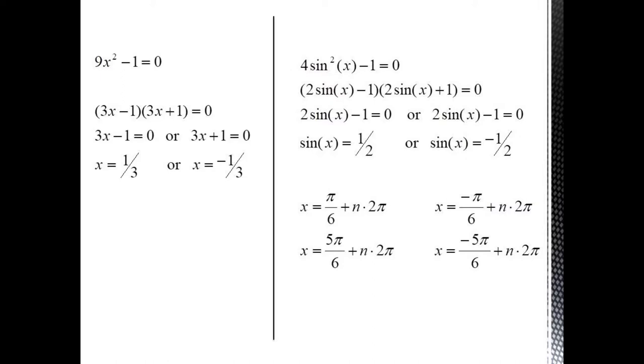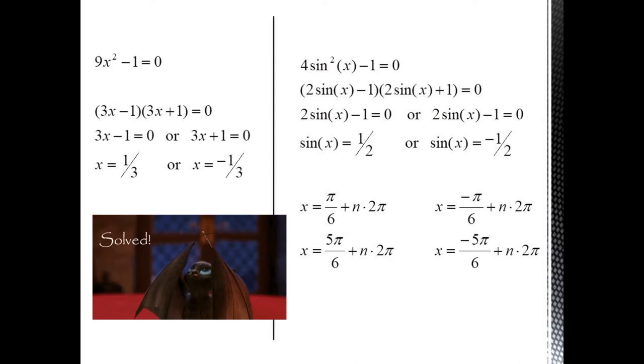So sine x equals 1 half gives us x equals pi over 6 or x equals 5 pi over 6. And sine x equals minus 1 half gives us x equals minus pi over 6 and x equals minus 5 pi over 6. And of course we can add n times 2 pi to each of these for all possible solutions.